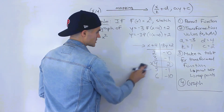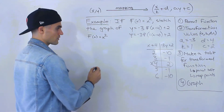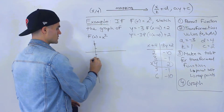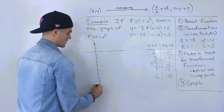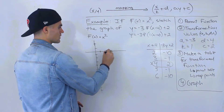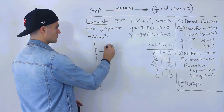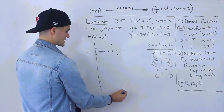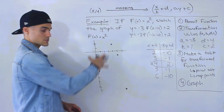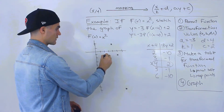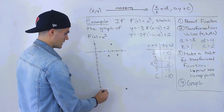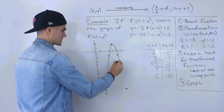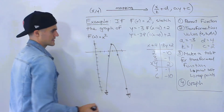Now we take these points and graph them. The vertex is at (4, 2) up here. Then (5, negative 1) is down here, and (6, negative 10) is all the way down here. On the other side, (3, negative 1) and (2, negative 10) give us the symmetric shape. So we end up getting this parabola. This is not to scale, but that's how the transformed graph looks.